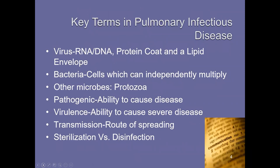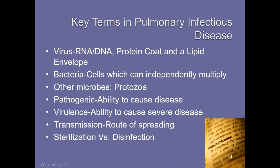Some key terms to review. A virus is something many of us are more attuned to given the attention paid to COVID-19. It's really a fairly simple microbe in terms of structure — an RNA or DNA strand with a protein coat contained in a lipid envelope. Bacteria, on the other hand, are cells that can independently multiply. Viruses need a living host — they are obligate parasites. Bacteria do not necessarily need a host.